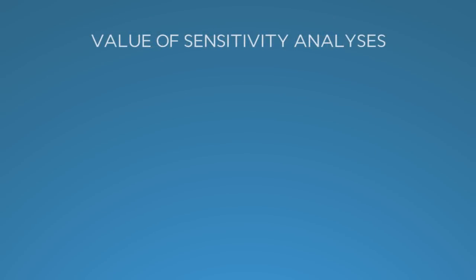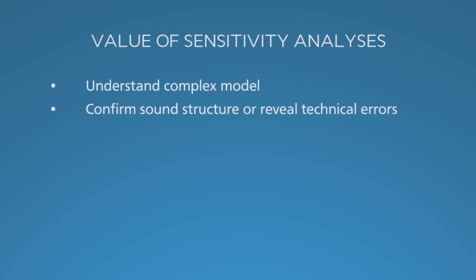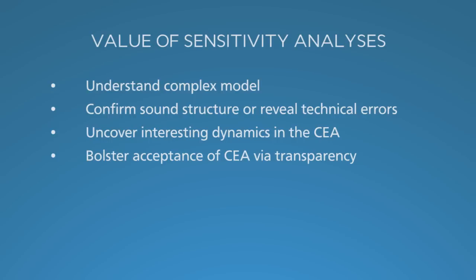Sensitivity analyses do more than just quantify the impact of uncertainty in model input values. They help the analyst understand a model that can get pretty complex. If results change in predictable ways as input values are widely varied, this is evidence of the model's sound structure. Conversely, unexpected patterns may reveal technical errors in the model. Occasionally, such unexpected results uncover interesting dynamics in the cost-effectiveness analysis — one example from our work is when the cost of antiretroviral therapy for HIV didn't affect the results because it appeared appropriately in two offsetting parts of the model.